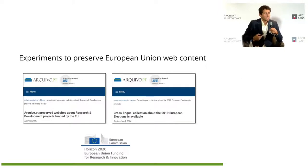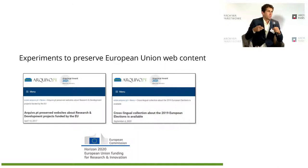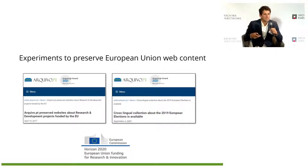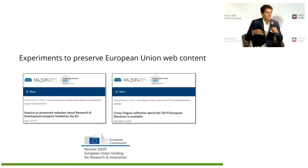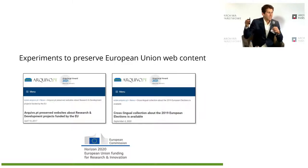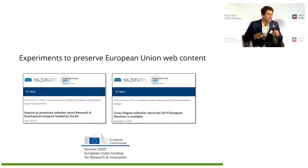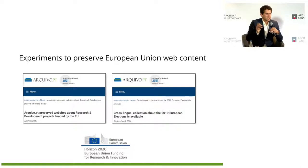We did follow-up experiments to preserve European Union web content. In collaboration with the Publications Office, we created a cross-language collection about the 2019 European elections. We collected a set of keywords about the elections, translated them using automatic translation, then asked the Publications Office of the EU to help correct all the translations. Then we submitted this information through a web search API, got the URLs, and collected the information — that's the methodology in a nutshell.